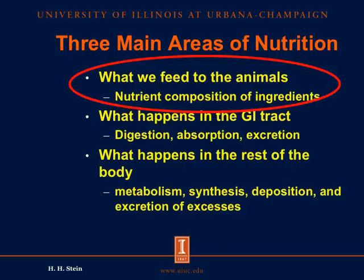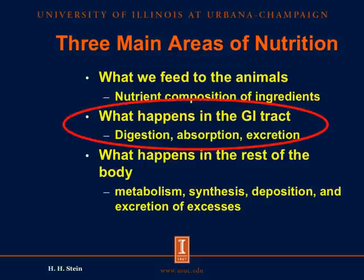This is the second presentation in this series. In the first presentation, we talked about the first area of nutrition, which includes what we feed to the animals, and that is related to the nutrient composition of ingredients. In this second part, I'll talk about what happens in the gastrointestinal tract of the pigs after we have fed the ingredient, including digestion of the feed, absorption of the nutrients, and excretion of excesses.